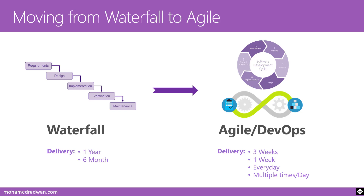When companies move from waterfall to agile, this changes the way we want to build software, because we can't build software the same way we did with waterfall — the traditional architecture and component structuring no longer work. This is why agile and DevOps change the way we should architect our software and structure our teams, because we can't have fast delivery while still using the same application architecture and team structure.